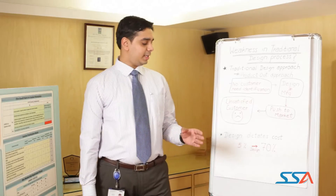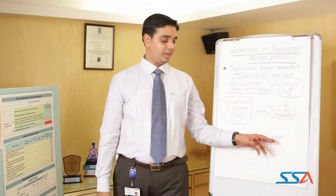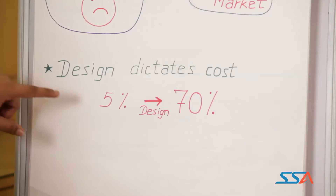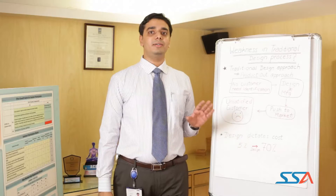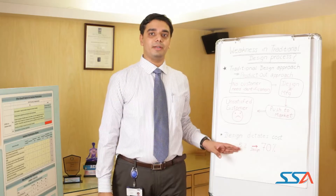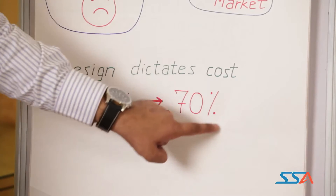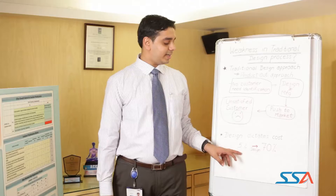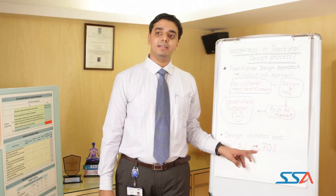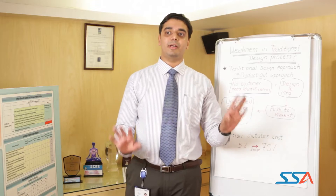Now let us see how design dictates cost. Around 5% of the product cost goes into the development of the product, and 70% of the product cost is dictated by the designers who have committed the cost towards the product.